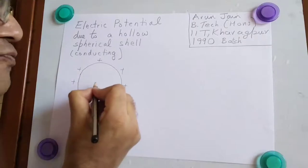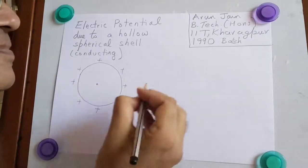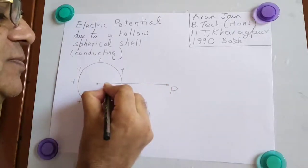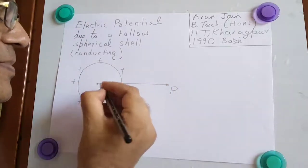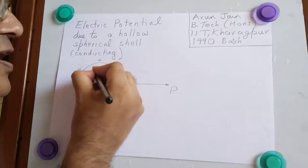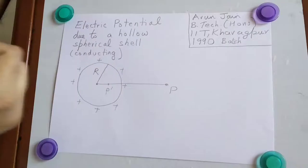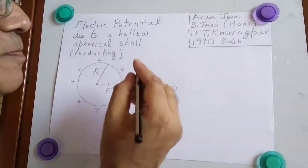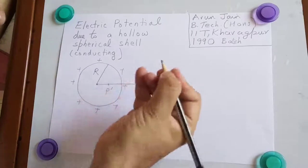We want to find the potential at an outside point and at an inside point. The radius of the hollow spherical conductor is capital R and the distance of point P or P prime, let us call it small r.